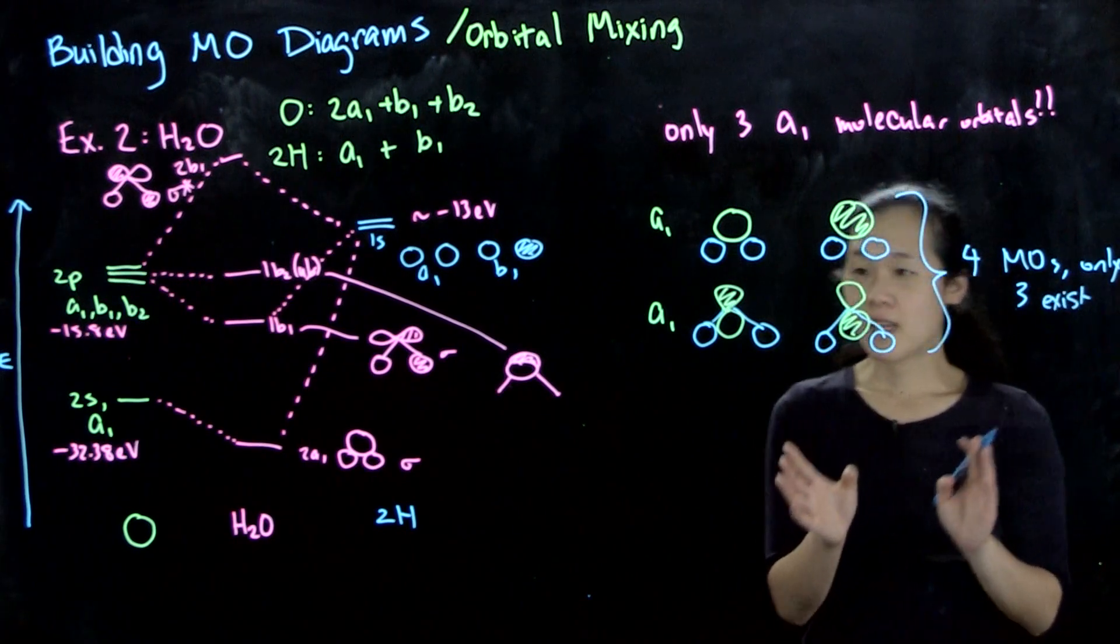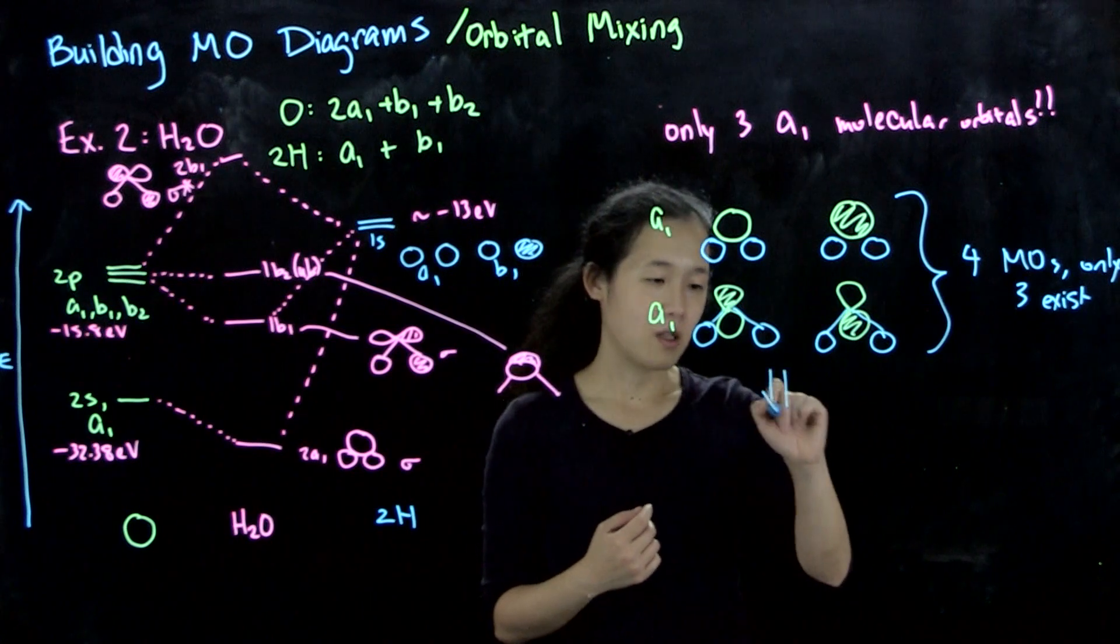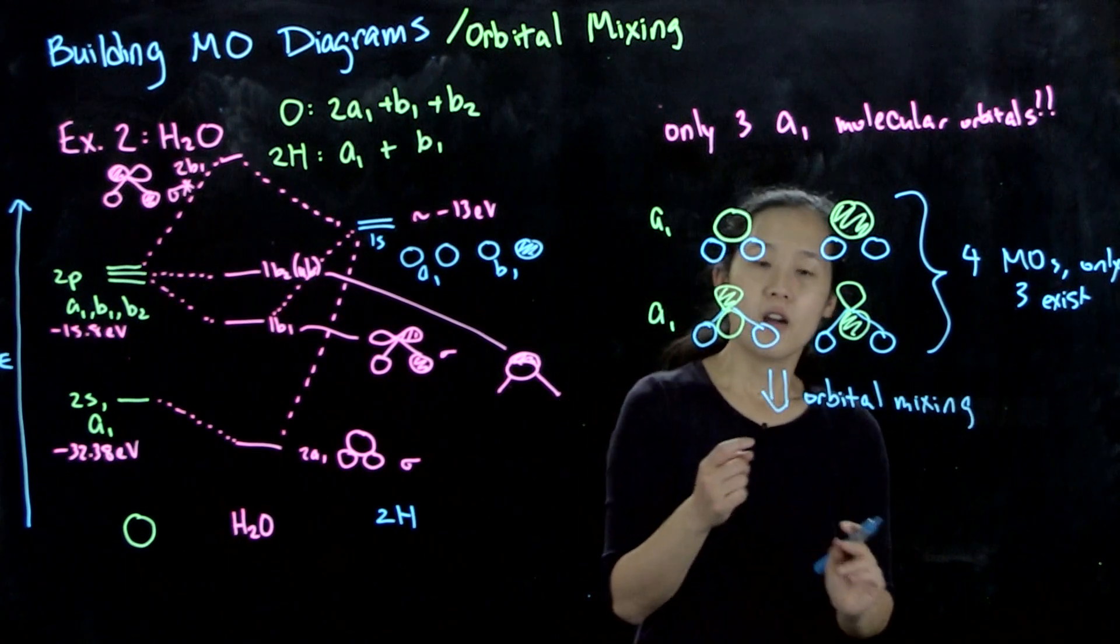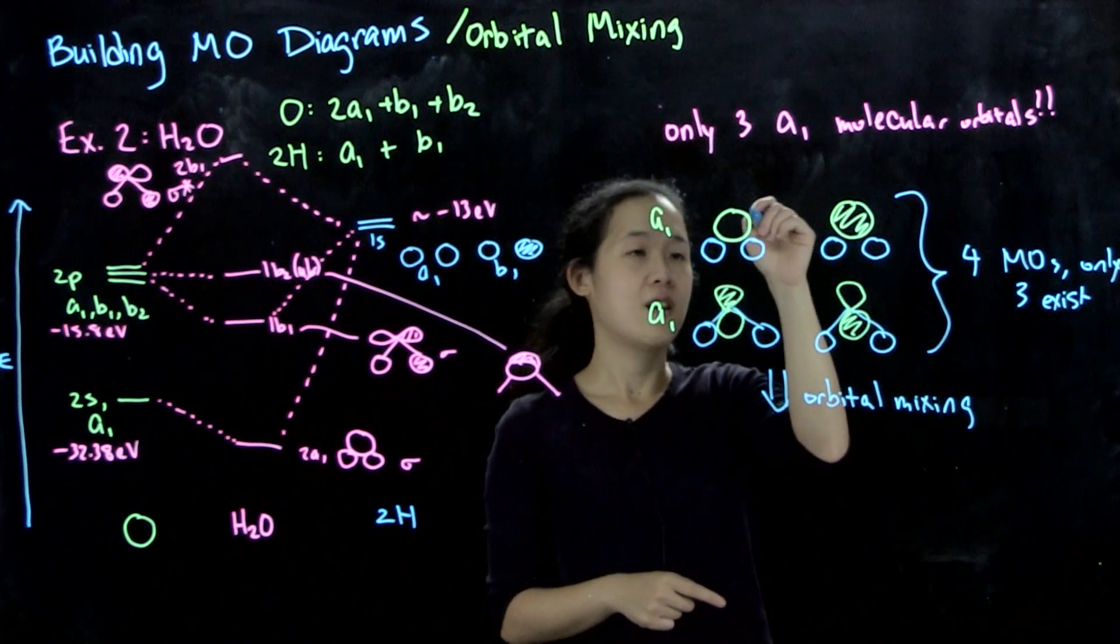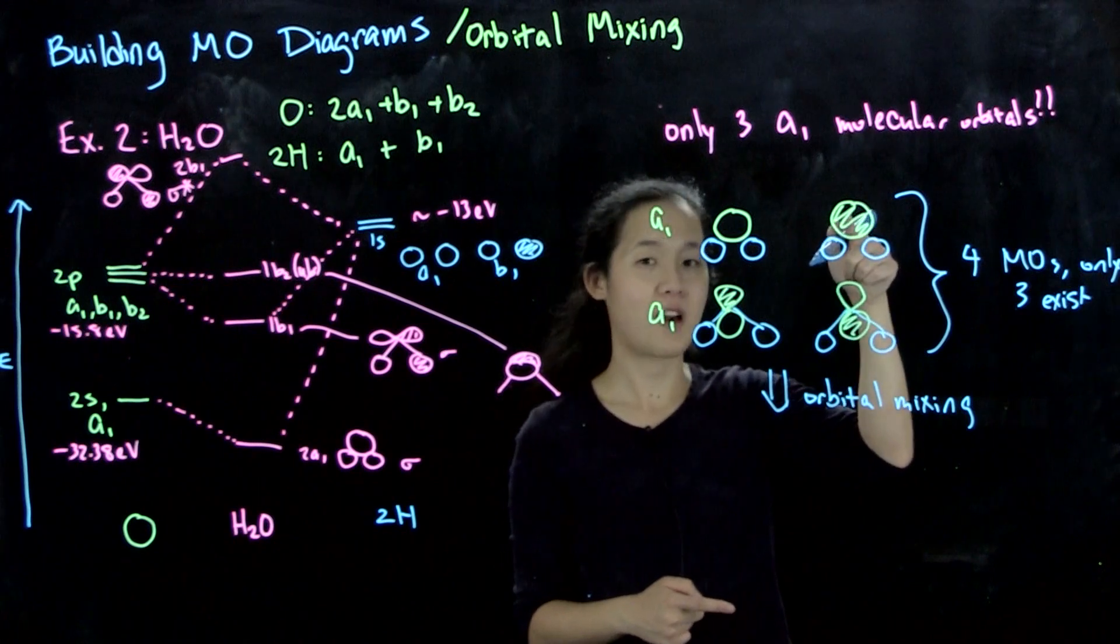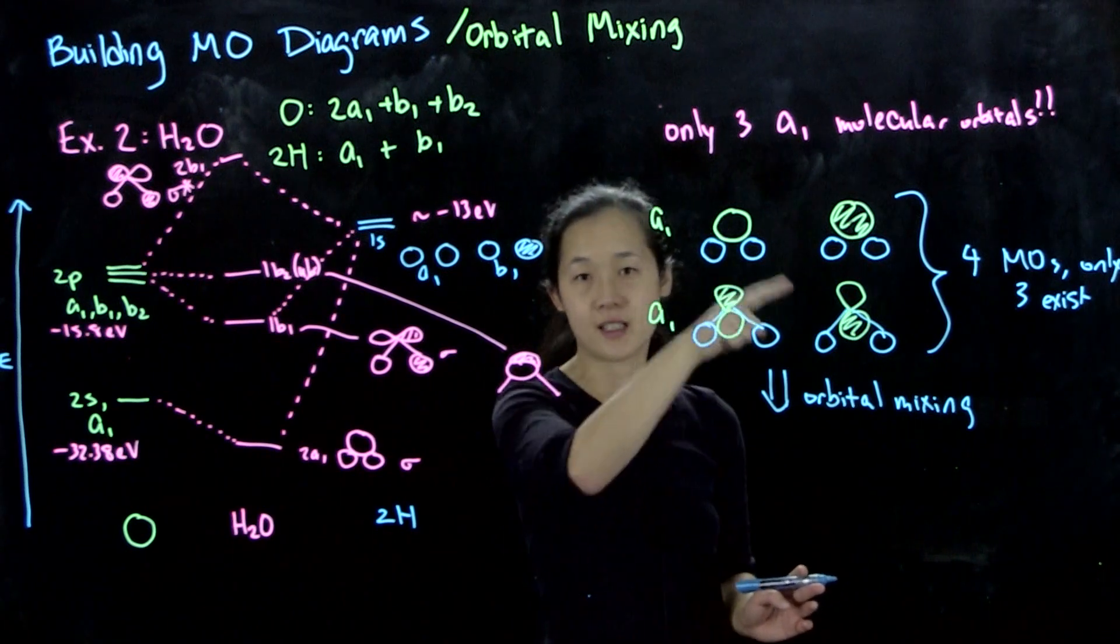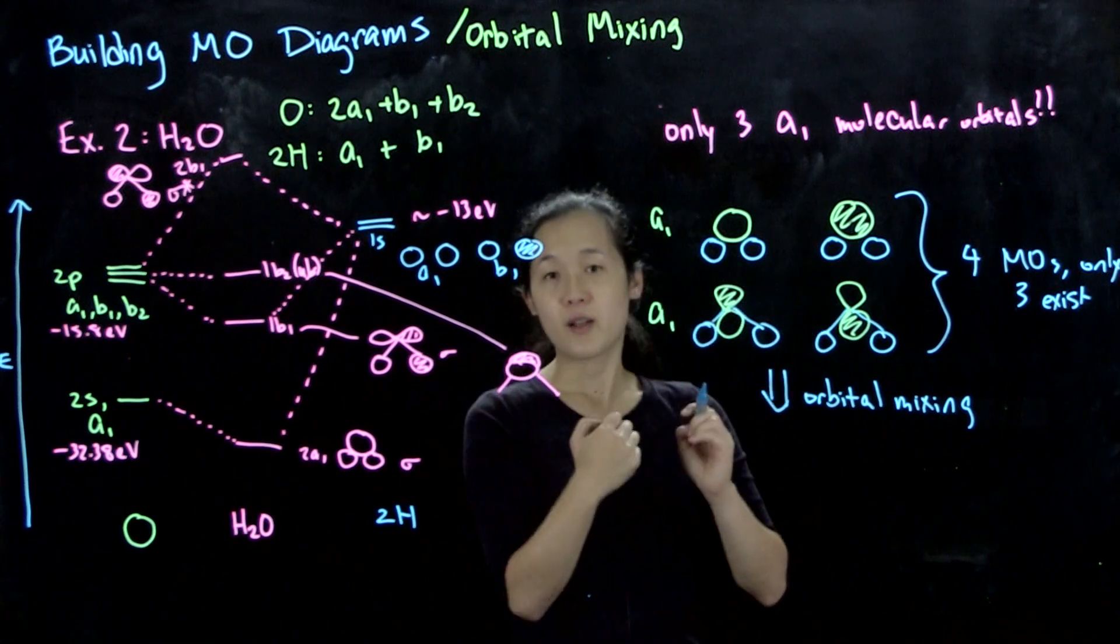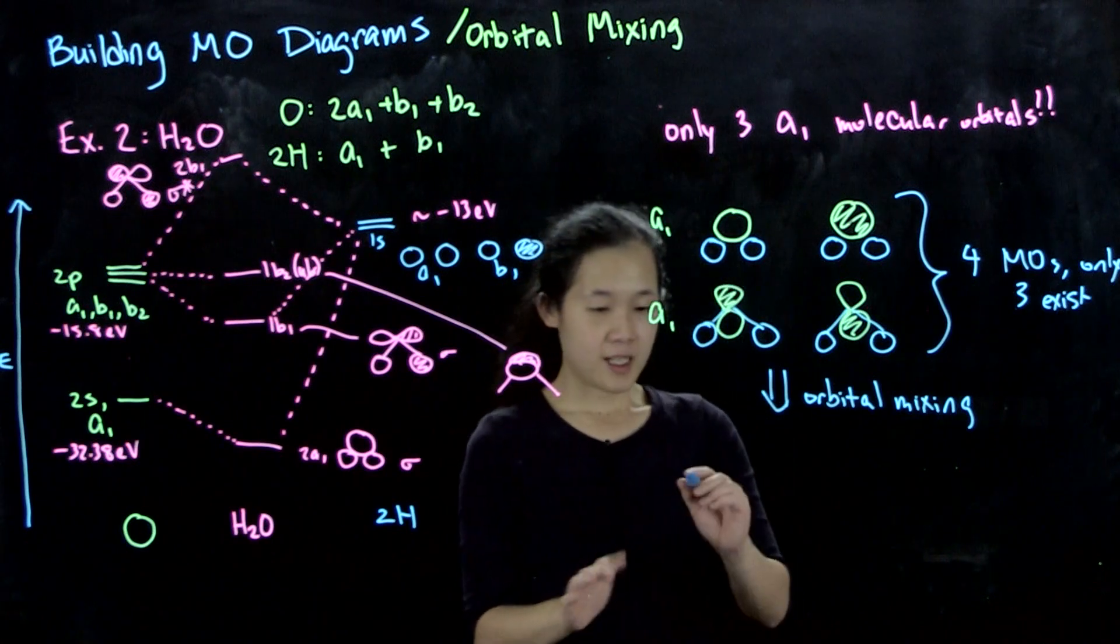The answer is that because the s and pz orbitals on oxygen are both of a1 symmetry, we get what's called orbital mixing. Meaning that the MOs, rather than being a linear combination of two orbitals each - this would be phi1 plus psi2, this would be negative phi1 plus psi2 - instead we have a linear combination of three things together with different coefficients.